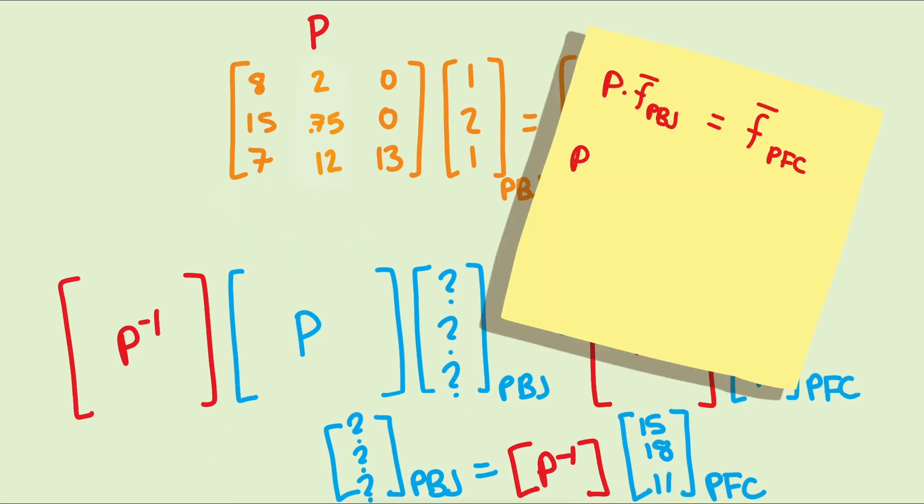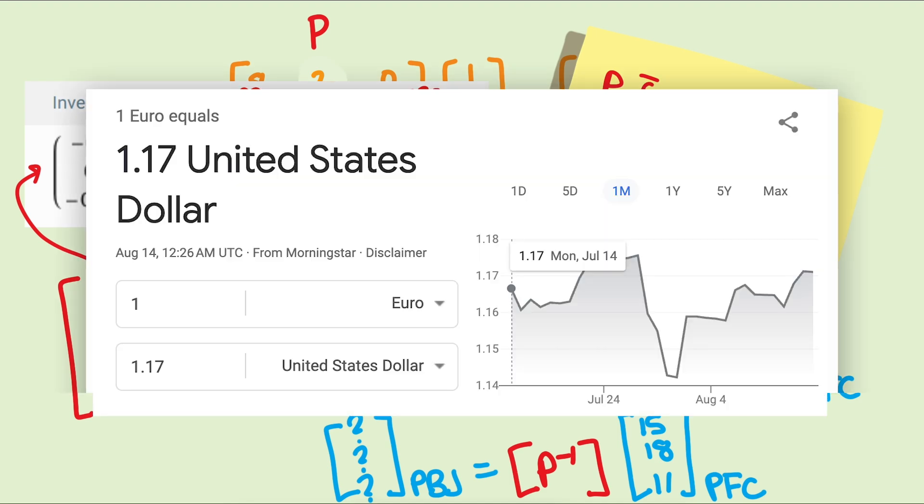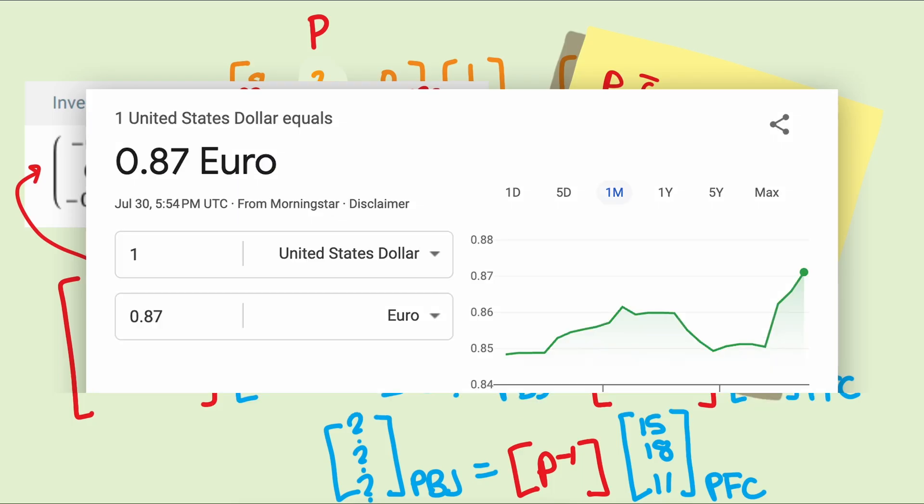Since P converts a vector in PBJ coordinates to PFC coordinates, then the inverse matrix will reverse the process. The inverse matrix has units as well, but now the columns of the inverse matrix are servings per gram instead of grams per serving. The units of P-inverse are reciprocals of the units of P. This makes sense because converting back and forth between units of real numbers is done by multiplying by a rate, like dollars per euros, one way, but then the reciprocal of that rate, euros per dollars, the other way.